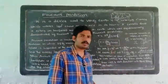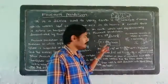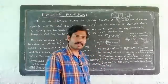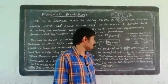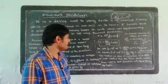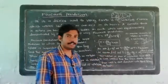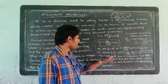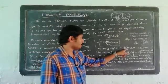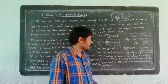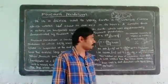So the time period of rotation of the plane of oscillation of the Foucault pendulum at latitude φ is T = 24 / sin φ hours. At the North Pole, φ = 90 degrees, so T = 24 / sin 90° = 24 / 1 = 24 hours.